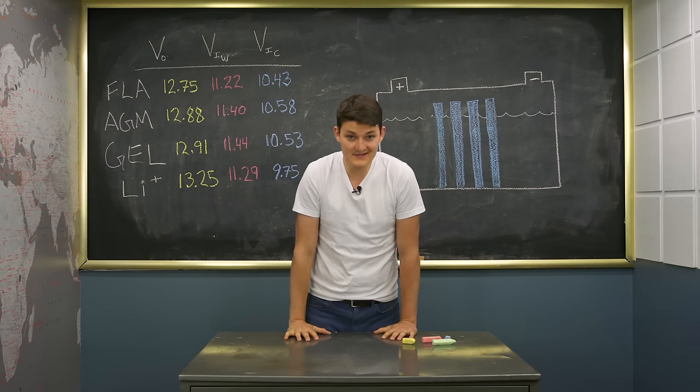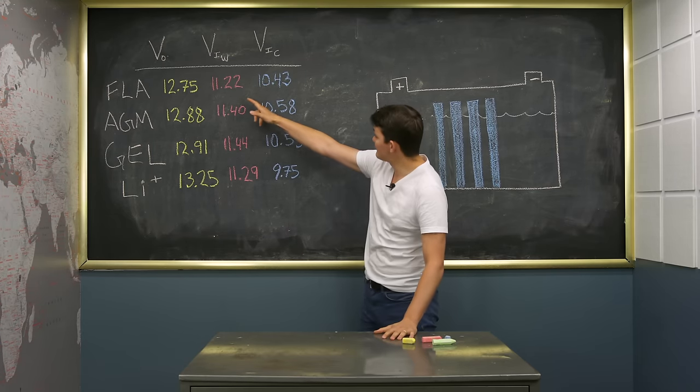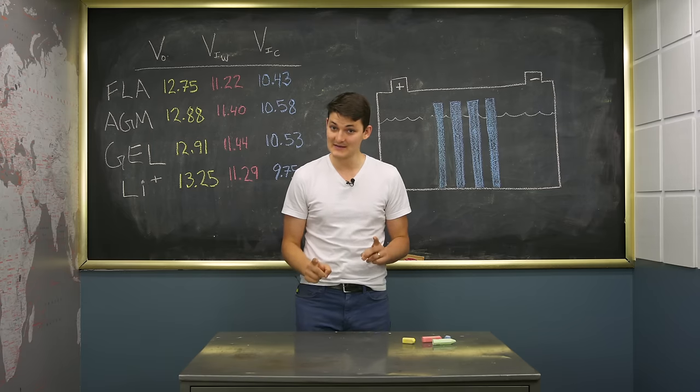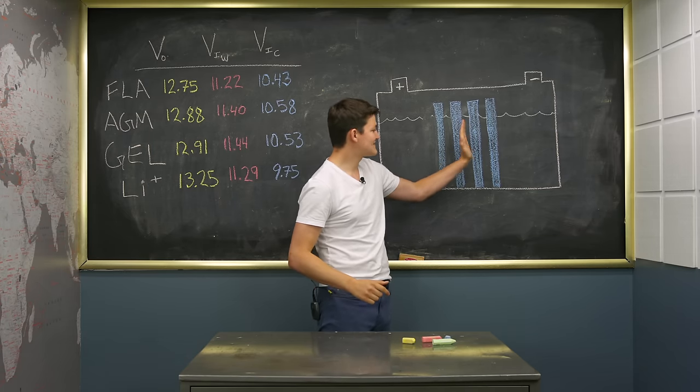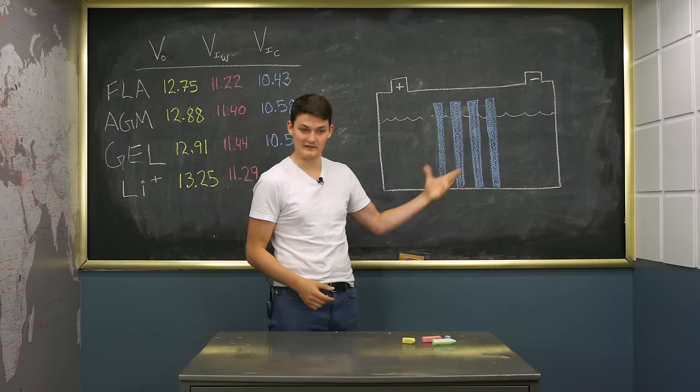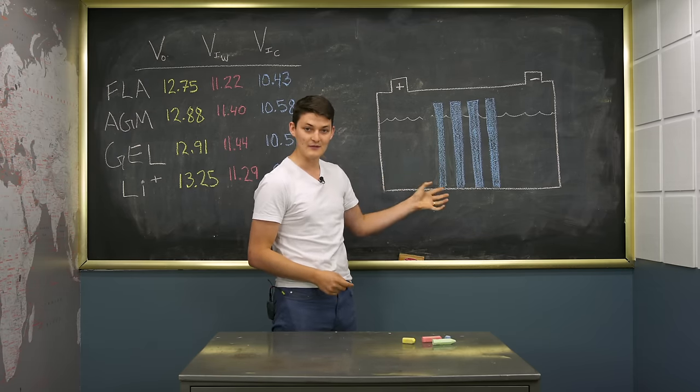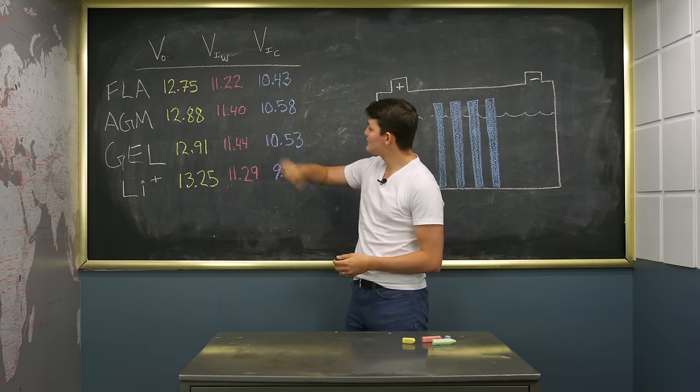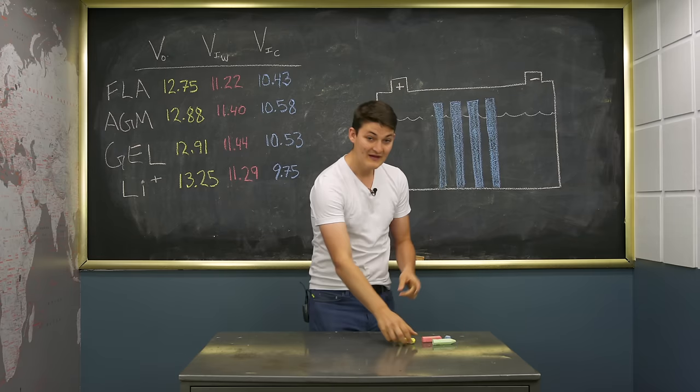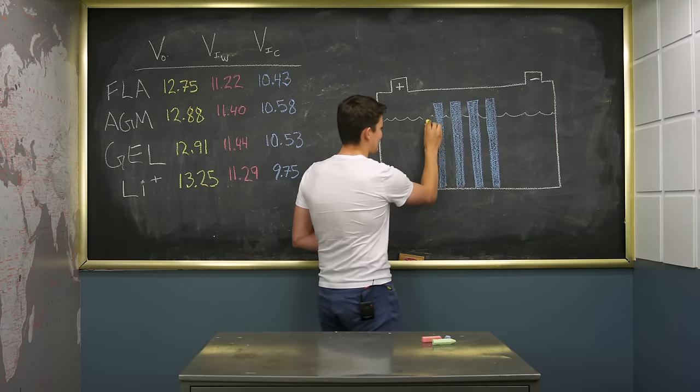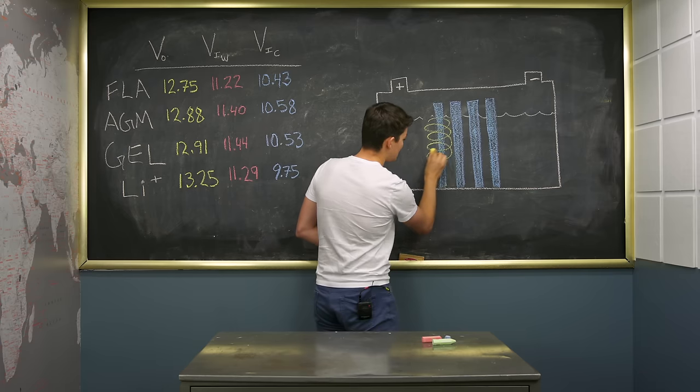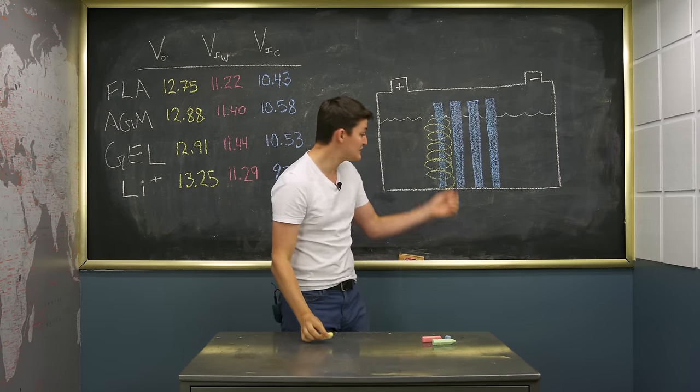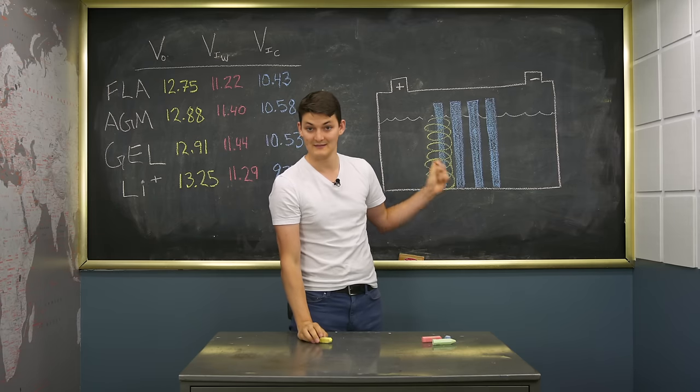Our conventional battery sagged the most. 11.22 volts warm, 10.43 cold. That's unsurprising. The electrode plates need to be strong enough to stand up, so you can't use pure lead. It's too soft. You need an alloy. An alloy is less effective. The AGM battery did better. 11.40 warm and 10.58 volts cold because the electrodes are wrapped in a fiberglass burrito. They're insulated from the cold and also structurally supported, so you can use damn near pure, efficient lead.